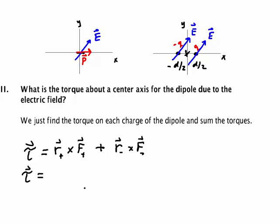In our drawing here, we can see that this arm going to the positive charge is d/2 î, and that's crossed with q times E. On the other side, we see that the distance